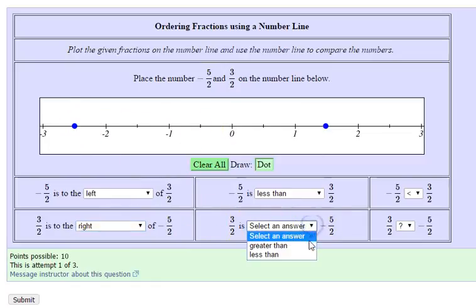This means 3 halves is greater than negative 5 halves. And we use this symbol. Notice again with the inequality, the open part is pointed towards the larger number.